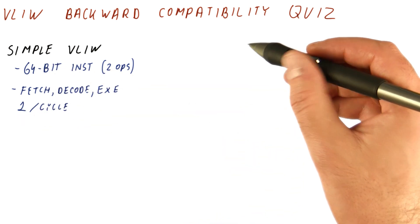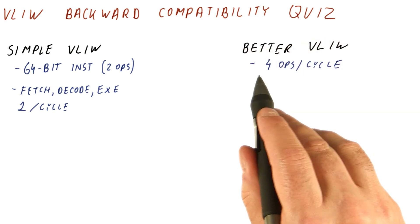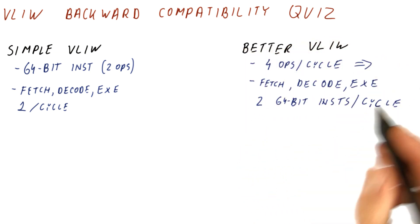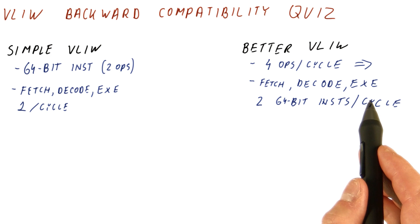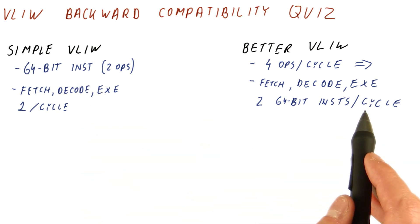Now we want to build a better version of this processor. It can do four operations per cycle, so it will need to fetch, decode, and execute two of those 64-bit instructions per cycle.